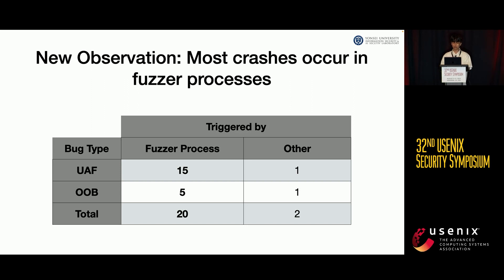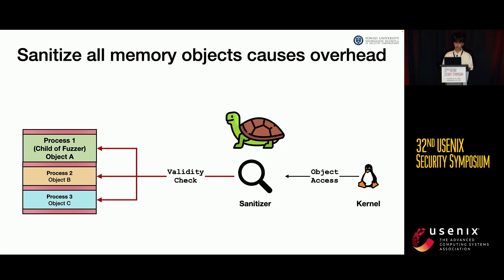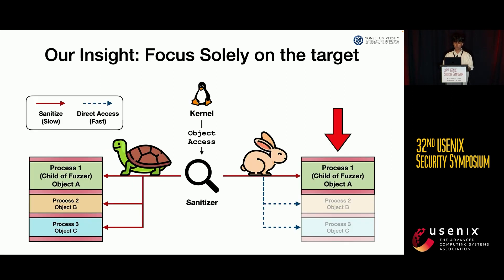To overcome these challenges, we deep dive into kernel fuzzing to observe interesting properties. The intriguing point is that a significant number of processes within the kernel are unrelated to the fuzzer. Over a week of intensive kernel fuzzing, we pinpointed the specific processes that trigger kernel bugs. Remarkably, out of 22 bugs found by KASAN, 20 were caused by a fuzzer process. In the figure, process 1 is a child of the fuzzer, while processes 2 and 3 are kernel objects unrelated to fuzzing. KASAN sanitizes the entire memory region, even regions unrelated to fuzzing, which incurs huge instrumentation overhead. From our observation, we gained two insights: first, sanitizing the entire kernel memory region is not efficient; second, the fuzzer process triggers most crashes.